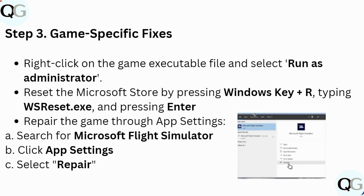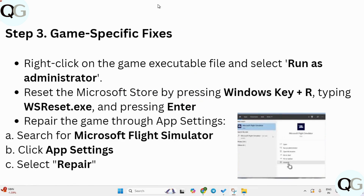Next, check your game-specific fixes. Right-click on the game executable file and select 'Run as administrator'. Reset the Microsoft Store by pressing Windows key + R, typing 'wsreset.exe', and pressing Enter. Then repair the game through App Settings — search for Microsoft Flight Simulator, click App Settings, and select Repair.